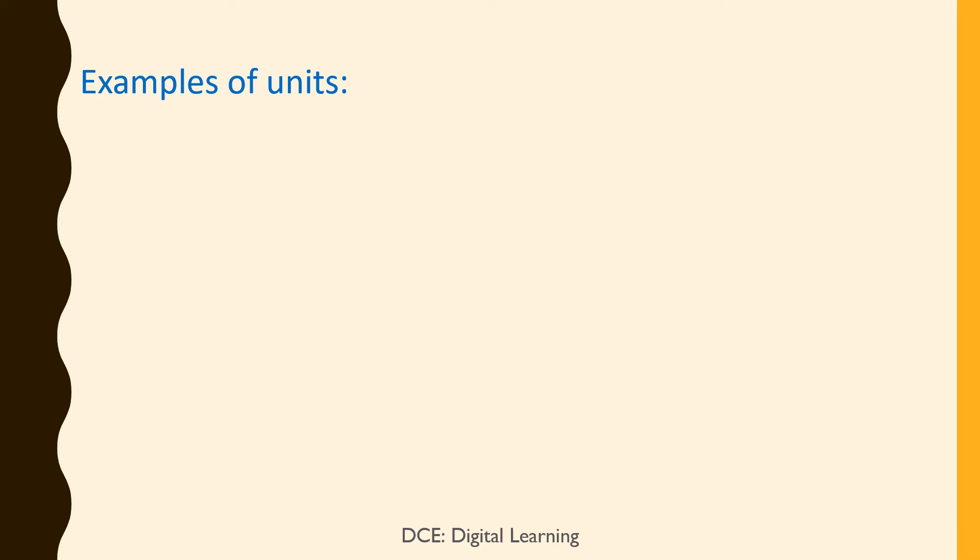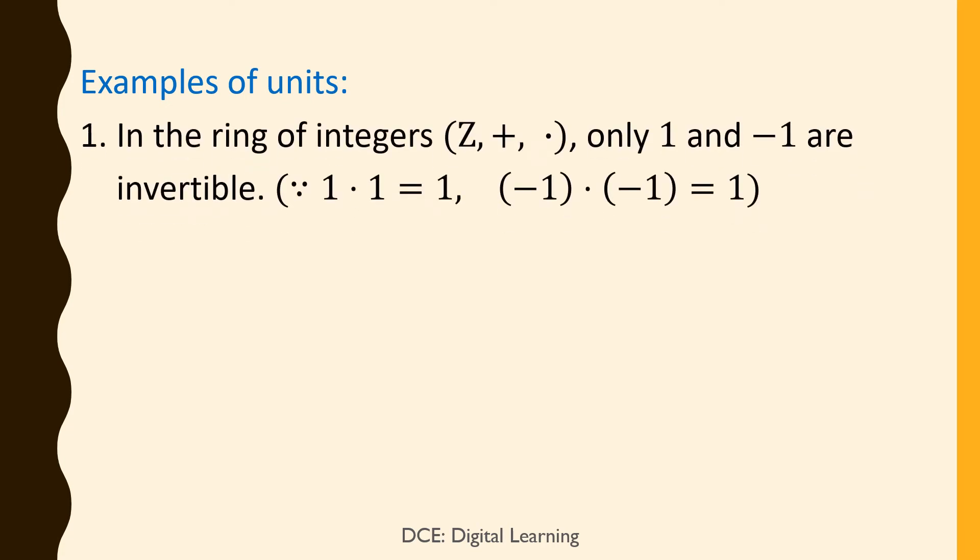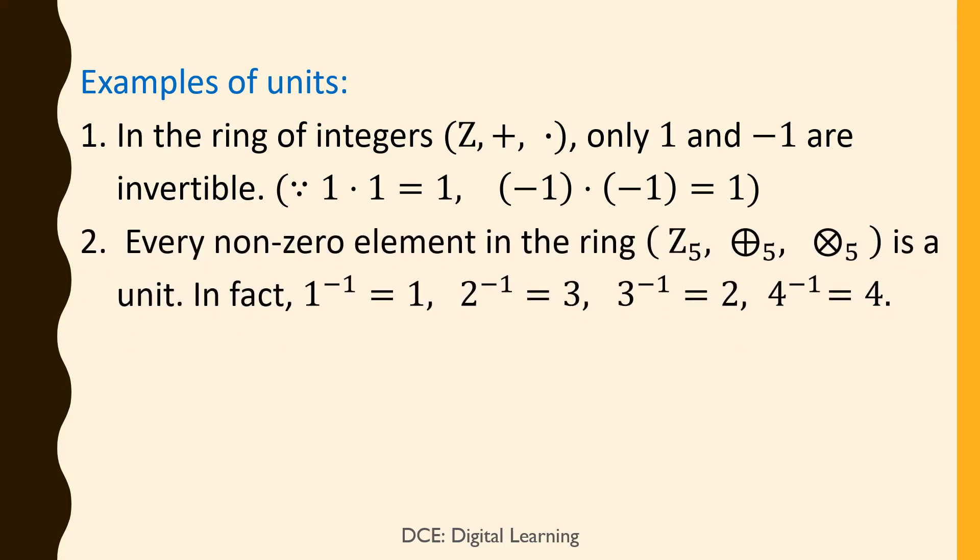Examples of units. 1. In the ring of integers Z (plus, dot), only 1 and −1 are invertible, because 1·1 = 1 and (−1)·(−1) = 1. No other integer is invertible. 2. Every non-zero element in the ring Z₅ (addition modulo 5, multiplication modulo 5) is a unit. In fact, inverse of 1 is 1, inverse of 2 is 3, inverse of 3 is 2, and inverse of 4 is 4.